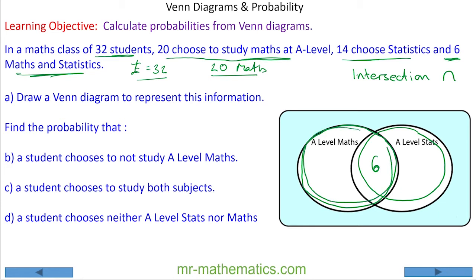Going back to the question: 20 choose maths at A-level, so in this oval there are 20, but we know there are 6 in the intersection, so there must be 14 in the other part. This means 14 choose maths but not stats. Moving on to stats: 14 choose stats, but 6 of them also chose maths, so that's 14 take away 6 = 8. Our two ovals form what is called a union, denoted with the union symbol.